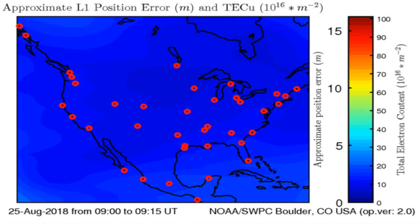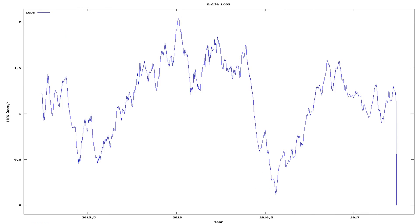And here we see the total electron content above the Earth. Anomalies in total electron content have sometimes preceded earthquakes below that area on Earth.